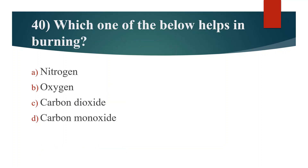Fortieth question. Which one of the below helps in burning? Option A: Nitrogen. Option B: Oxygen. Option C: Carbon dioxide. Option D: Carbon monoxide. Answer is Option B: Oxygen.